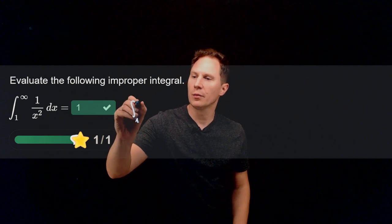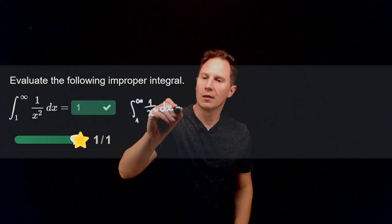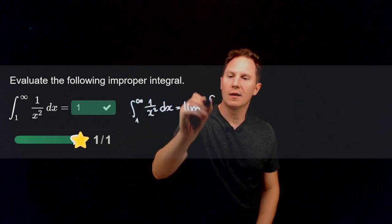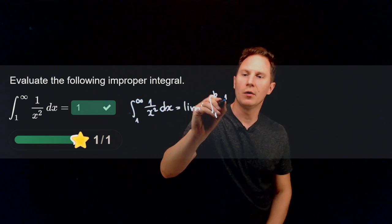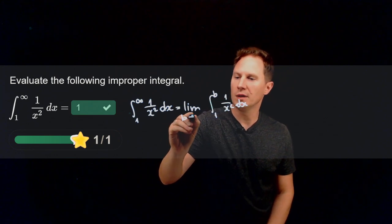So it's the integral from 1 to infinity of 1 over x squared dx. We can by definition write it as the integral from 1 to b of 1 over x squared dx and its limit as b goes to infinity.